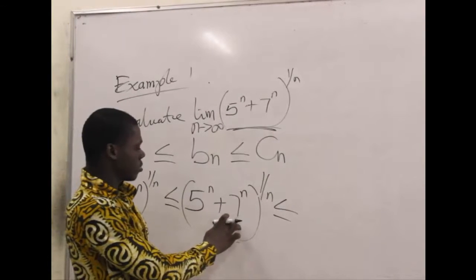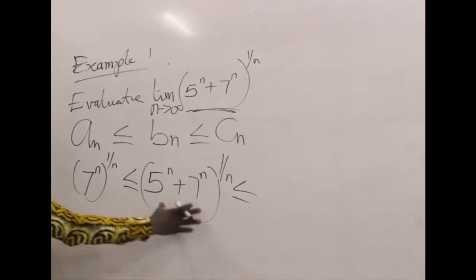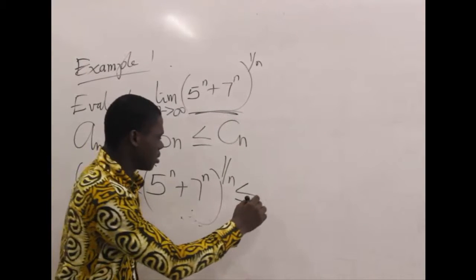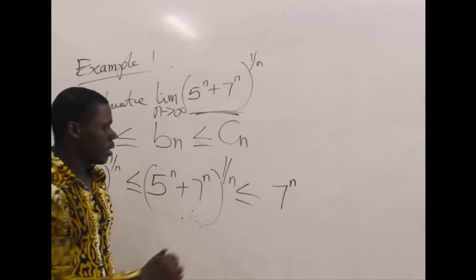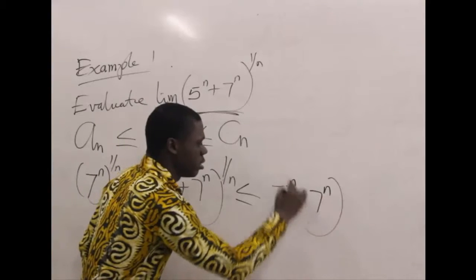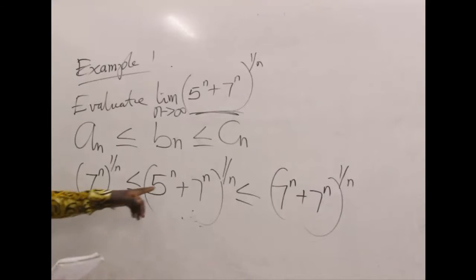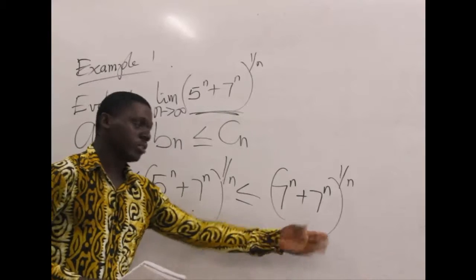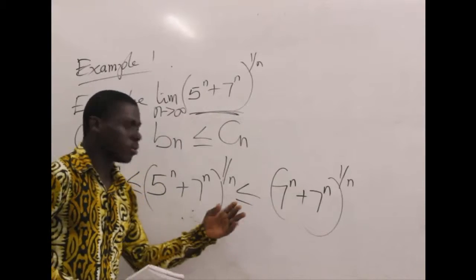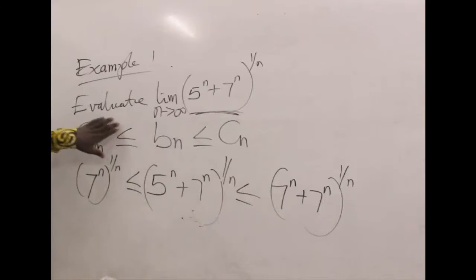For the other side, if I have 5^n and 7^n and I started with 7, then 7^n plus 7^n — that is 2 times 7^n raised to the power 1 over n — should be greater than or equal to (5^n + 7^n)^(1/n), since 7^n is greater than or equal to 5^n. So we are gradually fulfilling the condition for the sandwich property.